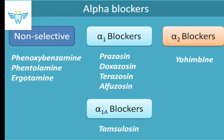Alpha blockers are classified in three ways: non-selective alpha blockers, which act on both alpha-1 and alpha-2; specific alpha-1 blockers; and alpha-2 blockers. Non-selective alpha blockers include phenoxybenzamine, phentolamine, and ergotamine. Alpha-1 blockers are prazosin, doxazosin, terazosin, and alfuzosin. The alpha-2 blocker is yohimbine. Tamsulosin specifically acts on the alpha-1a receptor.